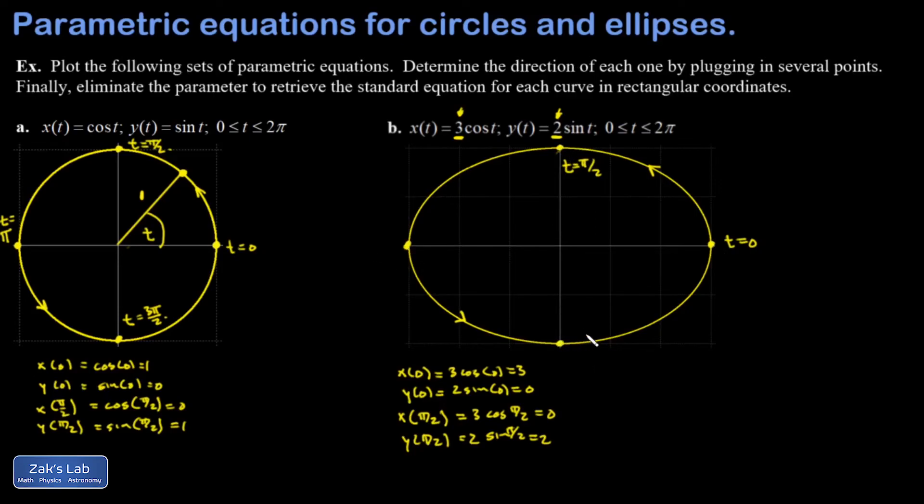Now the final part of the question is that I'm asked to eliminate the parameter to retrieve the standard equation for each curve in rectangular coordinates. There's a very standard trick for this: we're going to use the Pythagorean identity cosine squared plus sine squared equals one. So if I look at my circle, I can immediately say x squared plus y squared is cosine squared t plus sine squared t, but that's equal to one. That Pythagorean identity. So I get again the equation for the unit circle.